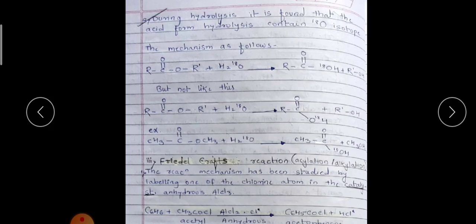The mechanism of the hydrolysis of an ester has been studied using the O-18 isotope in water. Please note: in your notes where 'photosynthesis' is written, please correct that — it should read 'hydrolysis of ester.' During hydrolysis it is found that the acid formed on hydrolysis contains the O-18 isotope.